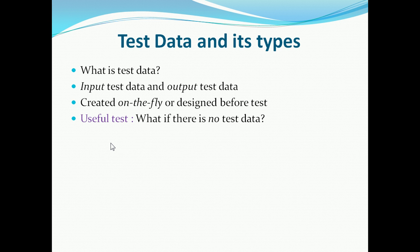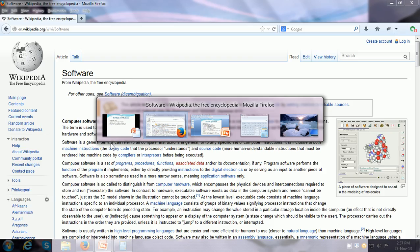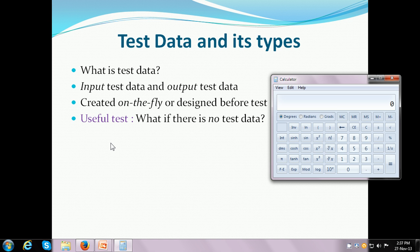One useful test is: what if there is no test data given to the system? Here I have the Windows calculator open and nothing is there — I haven't done any operation, I have not entered any numbers. When I press the equal to button, I am forcing the calculator to show me the output, but I have not given any test data. The system behaves as expected — it does not crash or give me an error message. It just works when no test data is given, and that can be different from system to system.